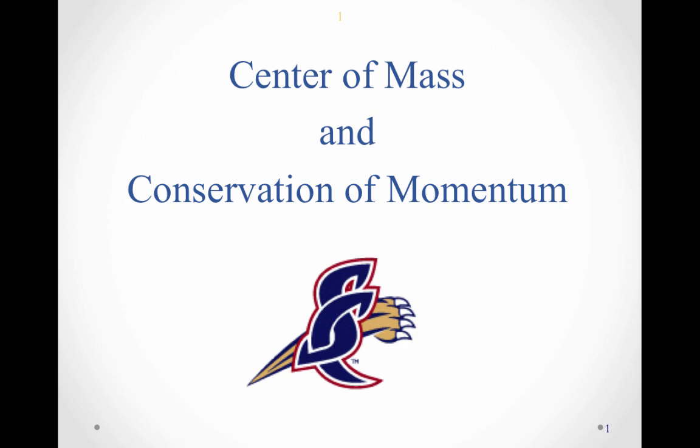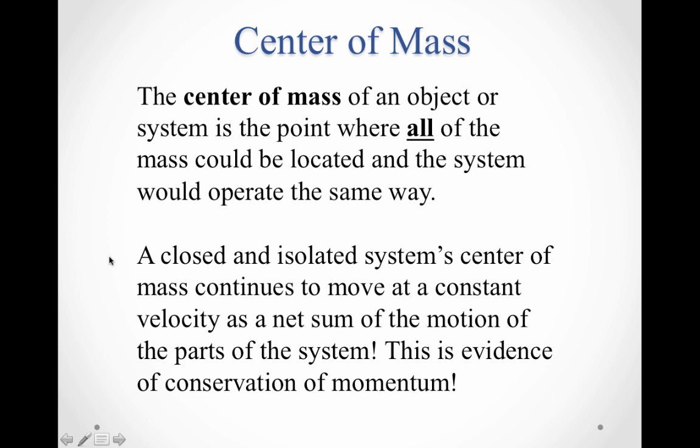Center of Mass and Conservation of Momentum. First, let's look at a definition of center of mass. The center of mass of an object, or system, is the point where all of the mass could be located and the system would operate the same way. A closed and isolated system's center of mass continues to move at a constant velocity as a net sum of the motion of the parts of the system. This is evidence of conservation of momentum.